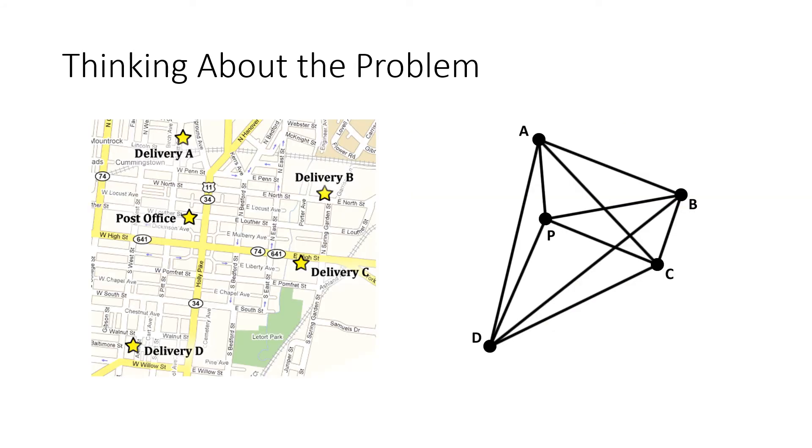We've got a graph that represents the five locations, the post office and the four delivery drop-off points, and we've got edges that connect all of these locations. There's no restriction on where we can go so we can connect every pair of points with an edge.